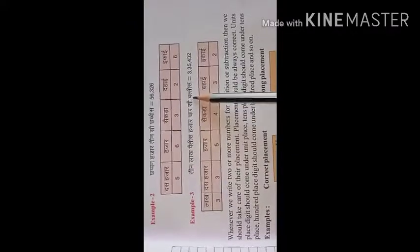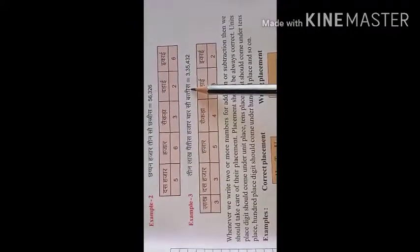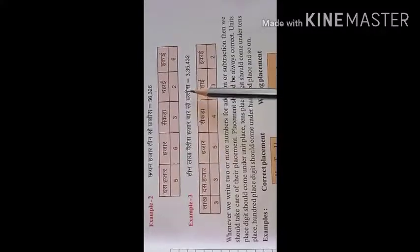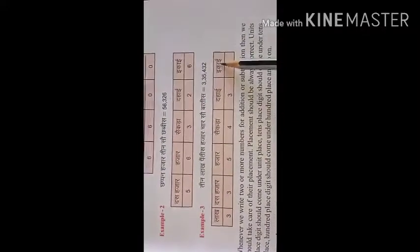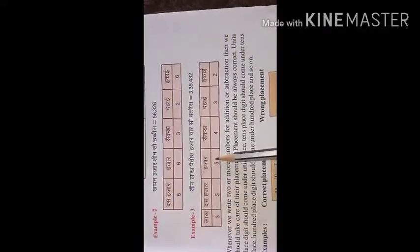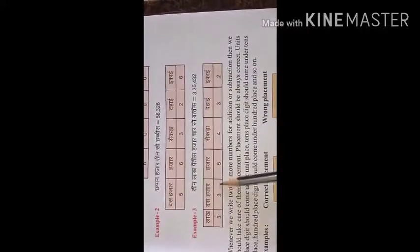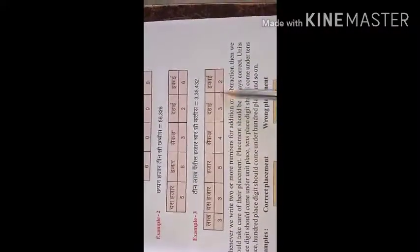Third example: Teen laakh paintalis hajar chaar so batis — three lakh forty-five thousand four hundred thirty-two. Arranged in columns: ones, tens, hundreds, thousands, ten thousands, and lakhs. Three lakh, thirty-five thousand, four hundred, thirty-two.